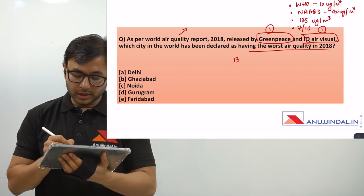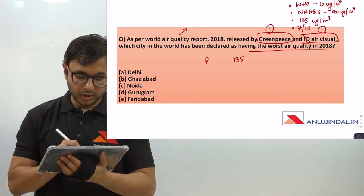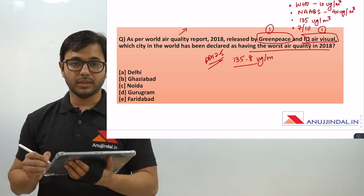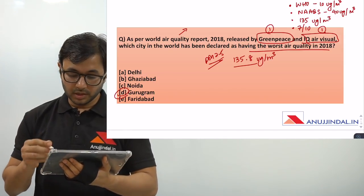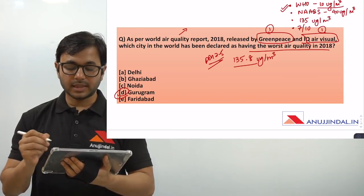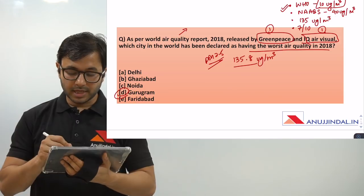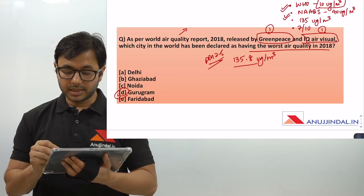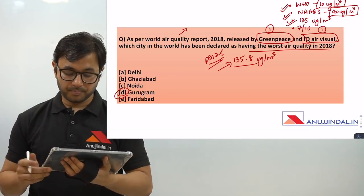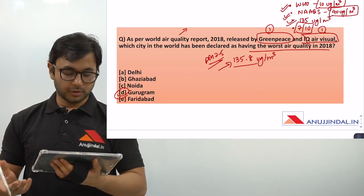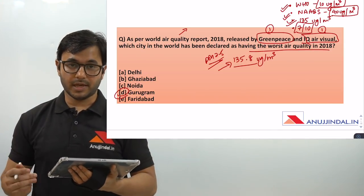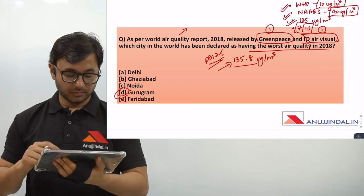The air quality as per PM 2.5 concentration for this particular city is exactly 135.8 micrograms per cubic meter, and the city is Gurugram or Gurgaon. As per WHO, the maximum PM 2.5 concentration should be 10 micrograms per cubic meter. As per NAAQS, the maximum limit is 40 micrograms per cubic meter, whereas Gurgaon had a concentration of 135.8. One shocking observation from this report is that 7 out of 10 cities with the worst air quality in the world lie in India, all in the concentration of the National Capital of Delhi.